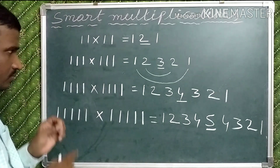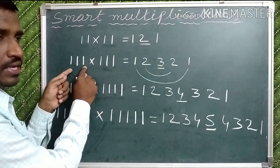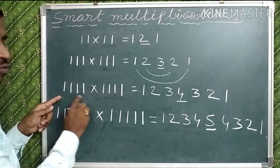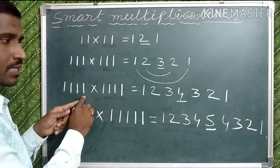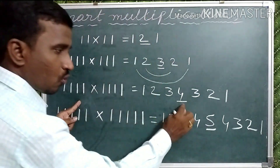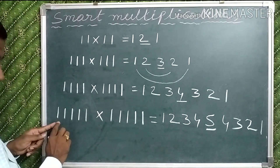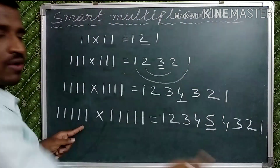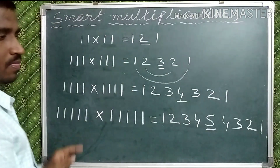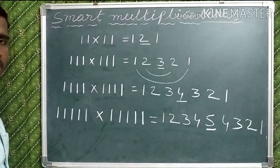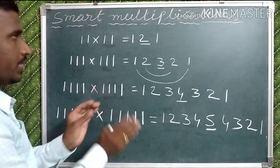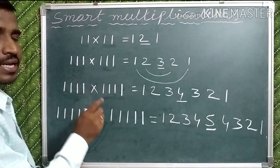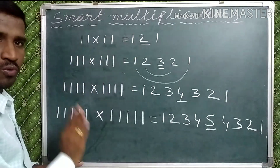Note: for 3 ones, the highest digit in the answer is 3. For 4 ones, the highest digit is 4. For 5 ones, the highest digit will be 5. This trick is applicable only when the number of ones are equal on both sides.